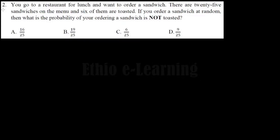You go to a restaurant for lunch and want to order a sandwich. There are 25 sandwiches on the menu and six of them are toasted. If you order a sandwich at random, then what is the probability of ordering a sandwich that is not toasted?